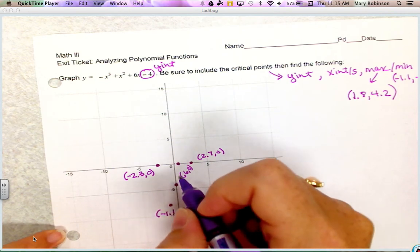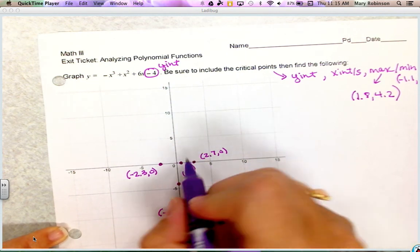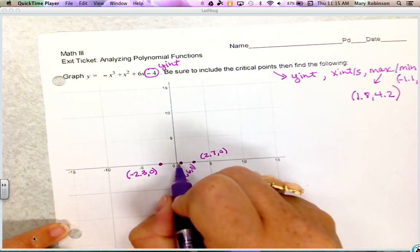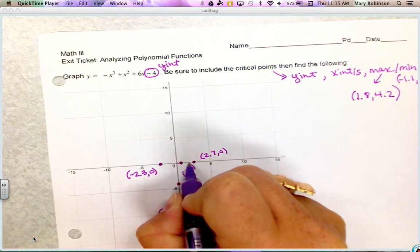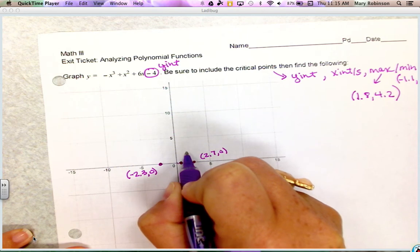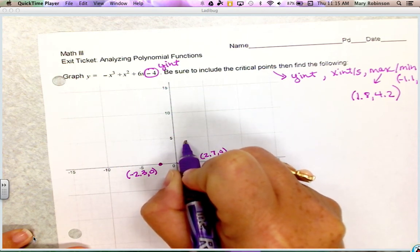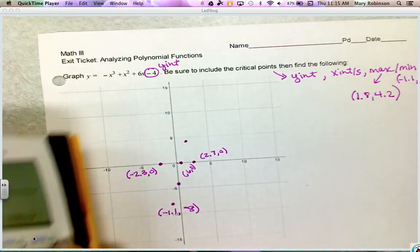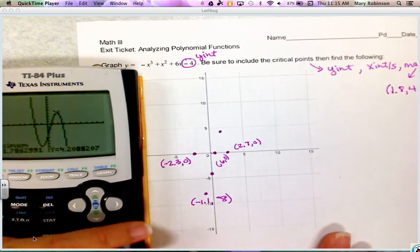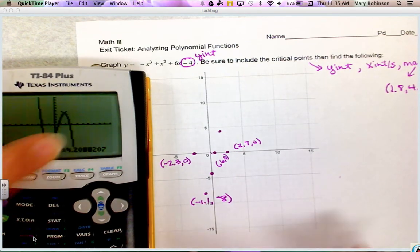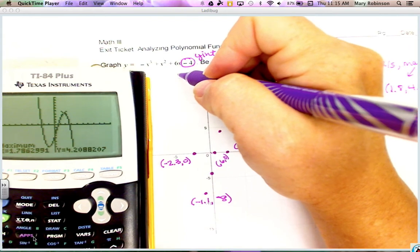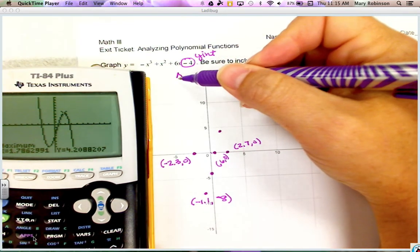We shouldn't be scared of these values just because they're decimals. When we collect real data and analyze it, we don't necessarily get pretty integers. A little bit, almost to 2 but not quite - 1.8 is just shy of 2, then up 1, 2, 3, 4 and a little bit. Now once we have our critical points graphed, we want to connect them and the shape should be like it is on the graph that we see on the calculator.